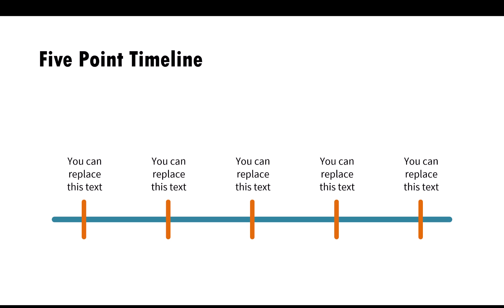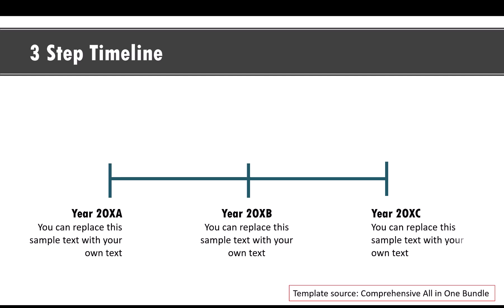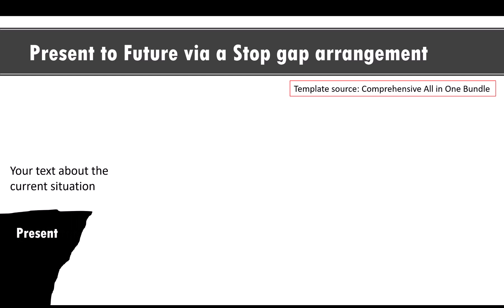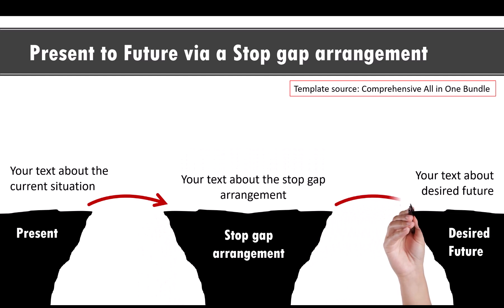I'm going to add this template to our comprehensive all-in-one bundle — if you already have the product, you can download it very soon. Let me show some of the other related templates available in the bundle that show the same idea of timeline animation but in very different ways. For example, we have two hands drawing the timeline and then introducing each animation event. Another way shows the present, the future, and a stopgap arrangement in the middle — visualizing how to move from the present to the desired future.